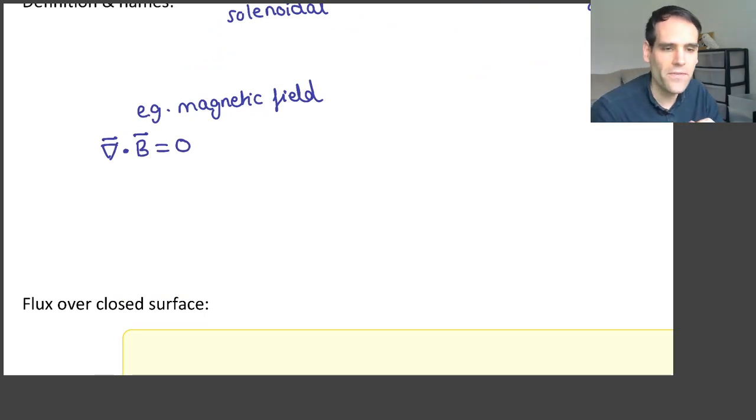And this is one of Maxwell's equations. This is telling us that there are no sources of magnetic field lines. This is also called magnetic monopoles. There is no magnetic monopole where the field lines emanate from or die into.